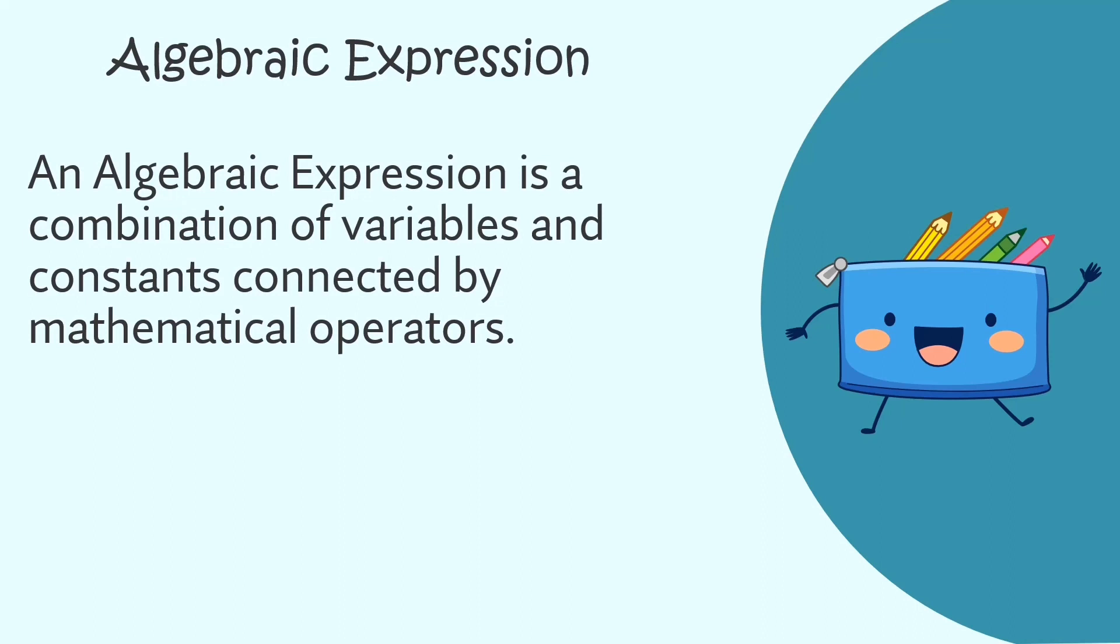Let's see a few examples. Let's first consider 4x. Here 4 is a constant and x is a variable. The two are connected by multiplication, so 4x is an algebraic expression. Now if I add a constant minus 3, 4x minus 3 is also an algebraic expression because we have a combination of a constant and a variable in this term and a constant in the next term.